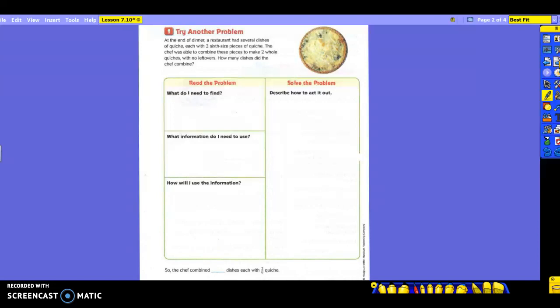All right, at the end of dinner. A restaurant had several dishes of quiche, each with two-sixths sized pieces of quiche. The chef was able to combine these pieces to make two whole quiches with no leftovers. How many dishes did the chef combine? Now, we didn't highlight on the last one, so let's make sure we do here, because we have to figure out all of the information that goes in here.